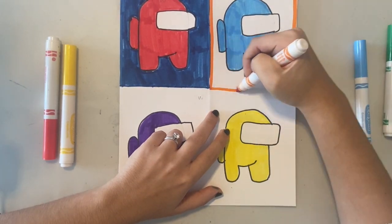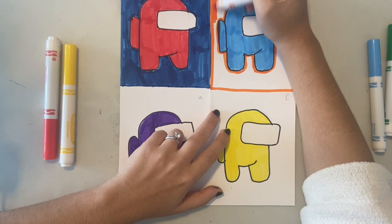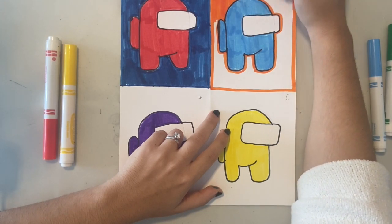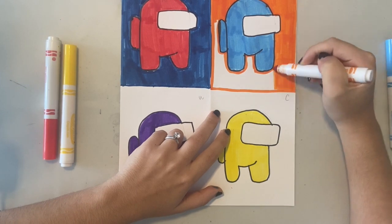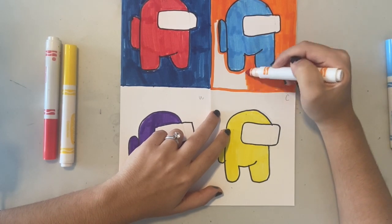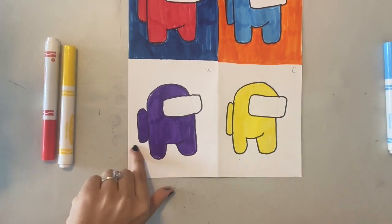Again, for my blue Among Us character, blue is a cool color. I'm going to choose the opposite, a warm color like orange for my background. I'm using nice, broad, even strokes and making sure to color in the whole background, so I don't leave any white space.